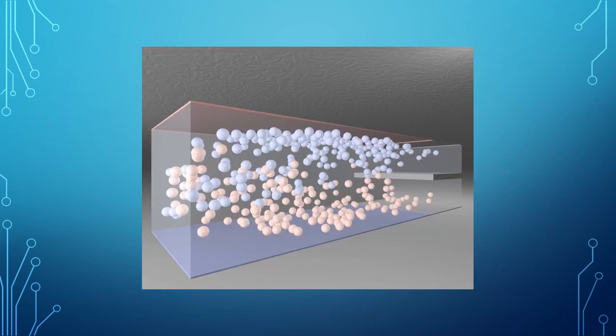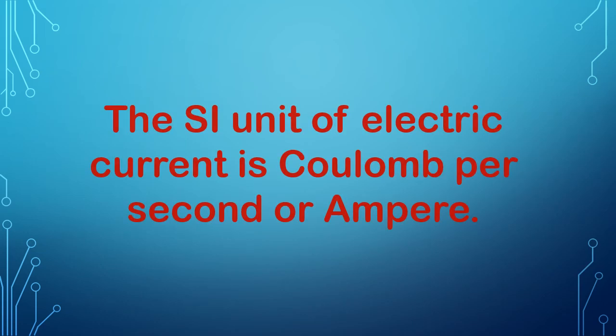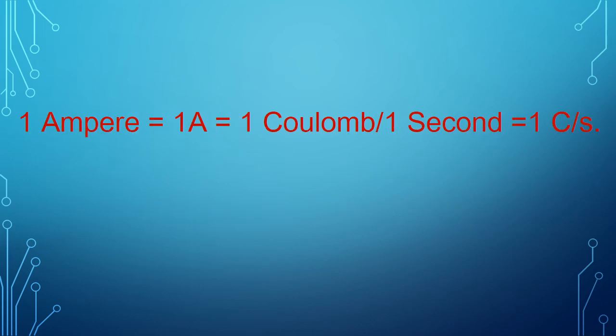We have seen that electric current is produced due to the flow of charged particles. Electrical charge flowing through a wire in one second can be called unit charge. The SI unit of electric current is Coulomb per second or Ampere. 1 Ampere also denoted as 1A is equal to 1 Coulomb per second. Electric current is a scalar quantity.